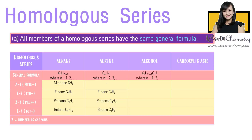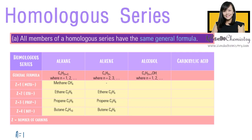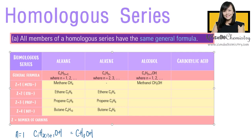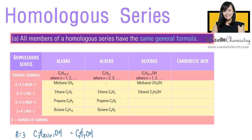The general formula of alcohol is CnH2n+1OH, where N starts with 1. The first member is methanol, where N equals 1, hence the formula is CH3OH. The second member is ethanol, N equals 2, hence the formula is C2H5OH. The third member is propanol, N is 3, hence the formula is C3H7OH.